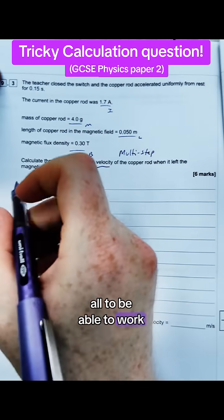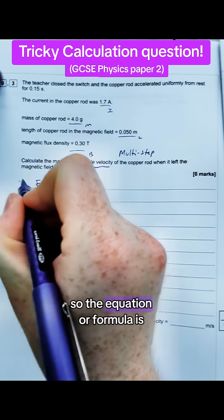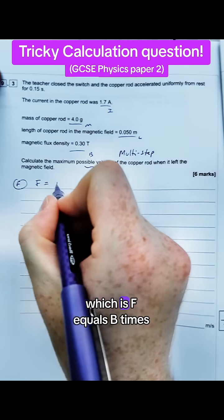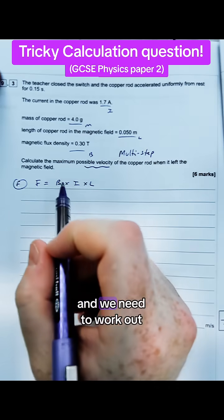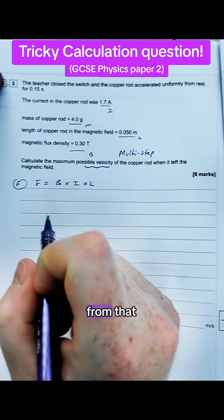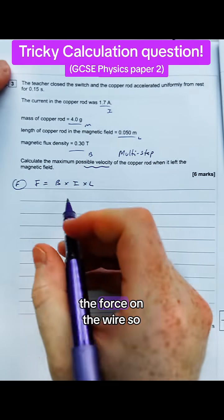So I'm going to write down first of all to be able to work out something from it. So the equation or the formula is F equals B times I times L, which is on your equation sheet, and we need to work out the force on the wire.